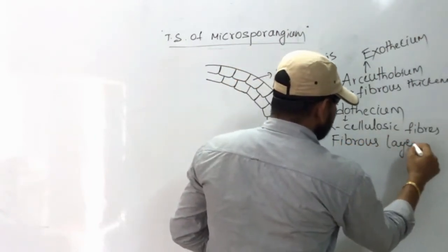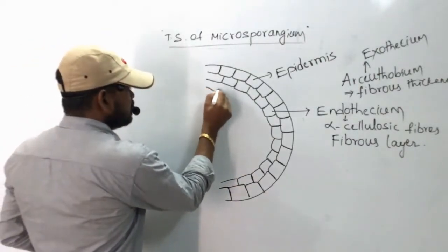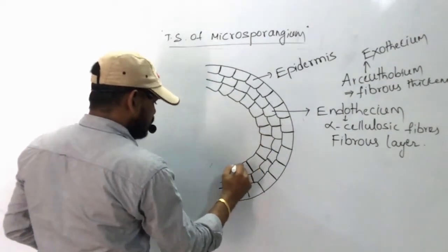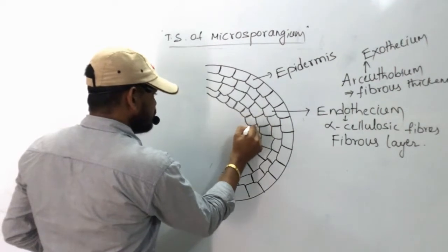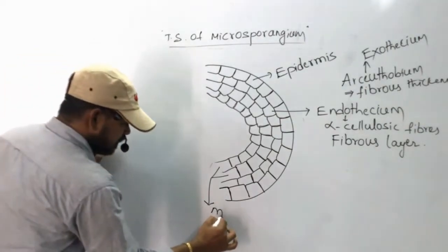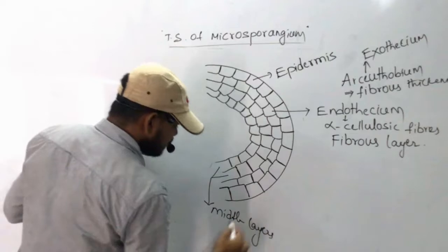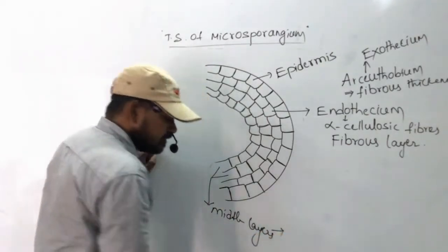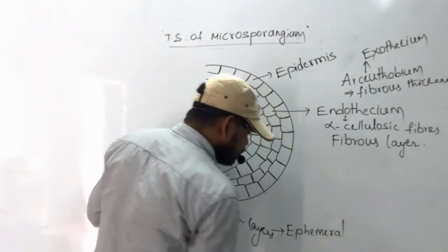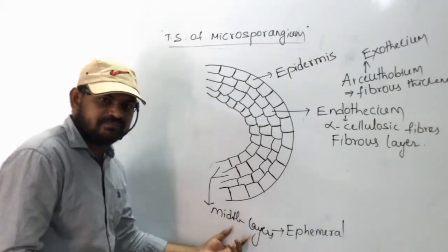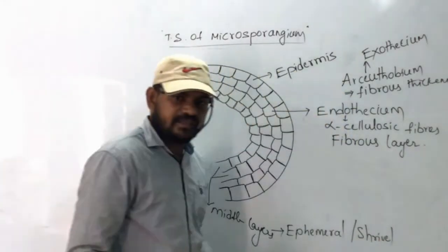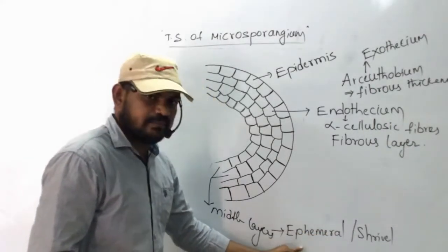Endothesium is also called the fibrous layer. Below the endothesium, we can see one, two, three layers called middle layers. Middle layers are not permanent — they are also called ephemeral, meaning they will shrivel and degenerate at maturity. Middle layers are also involved in protection and dehiscence of the anther.